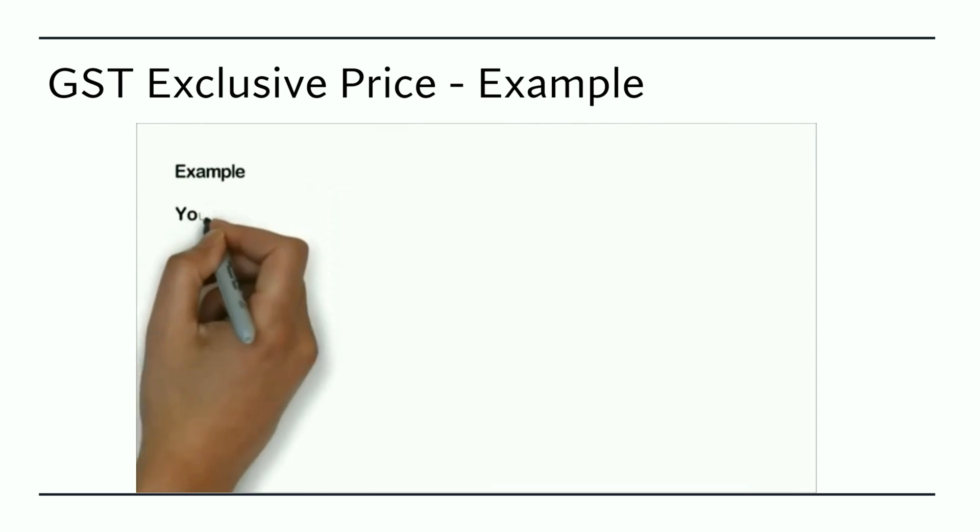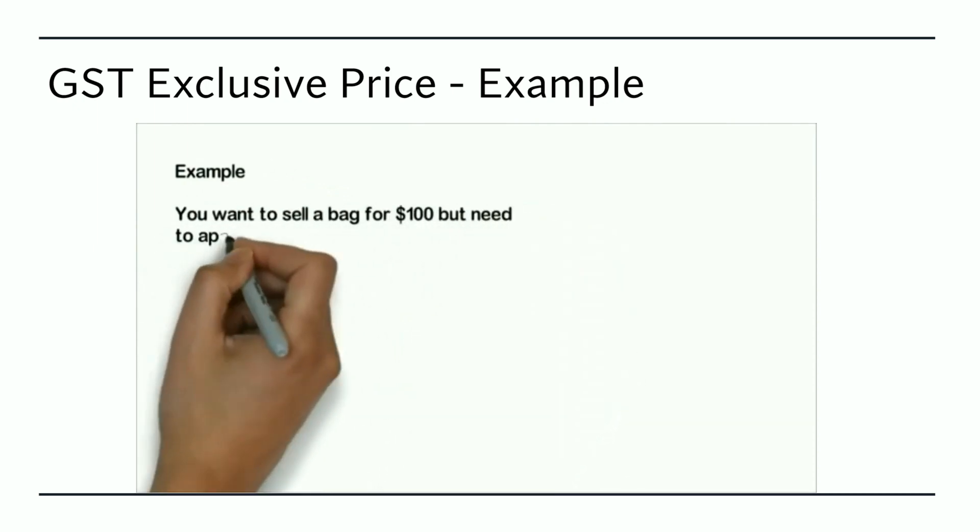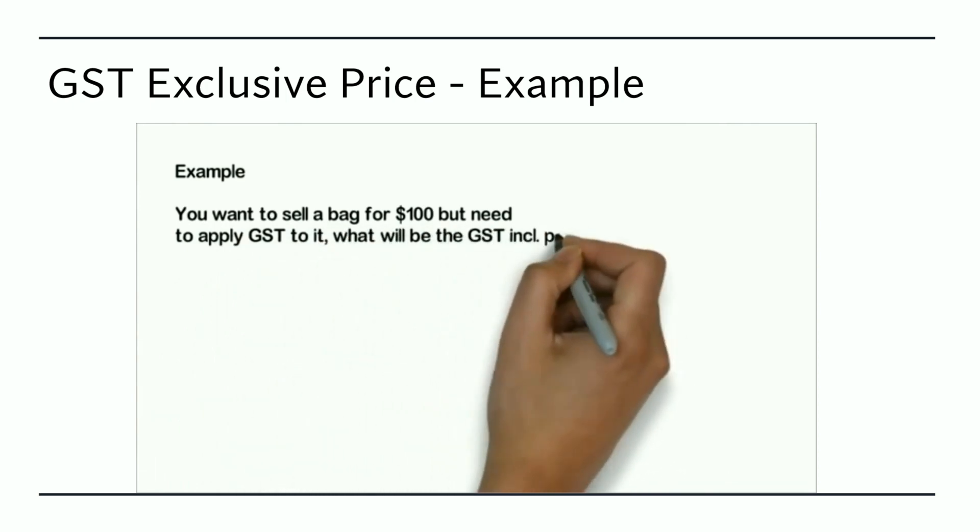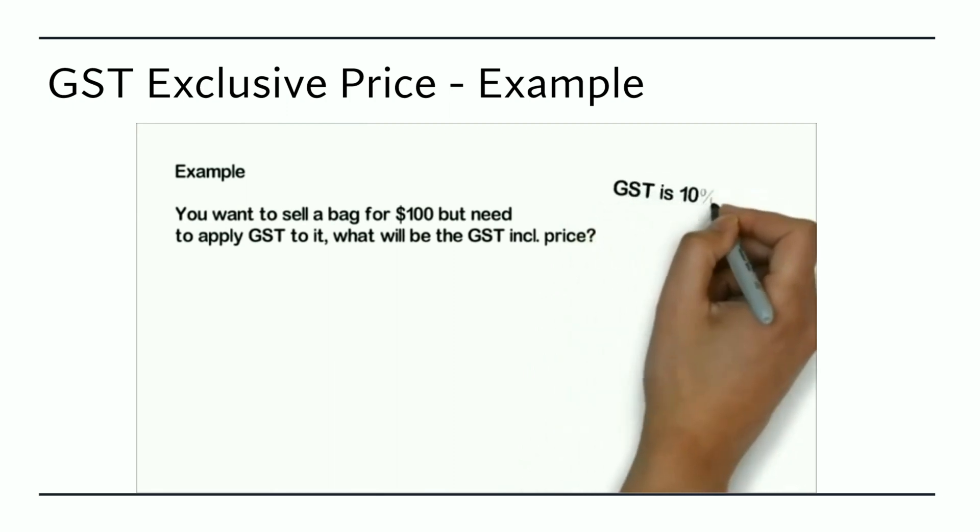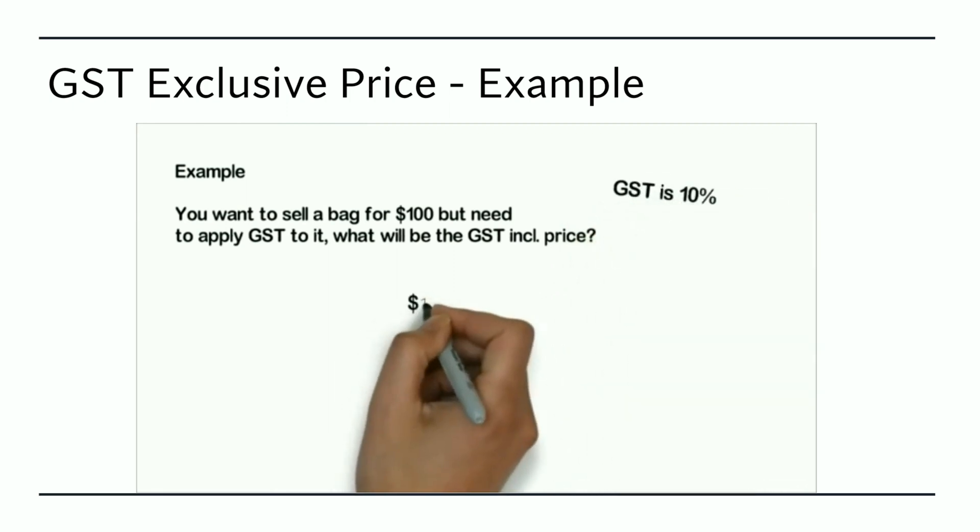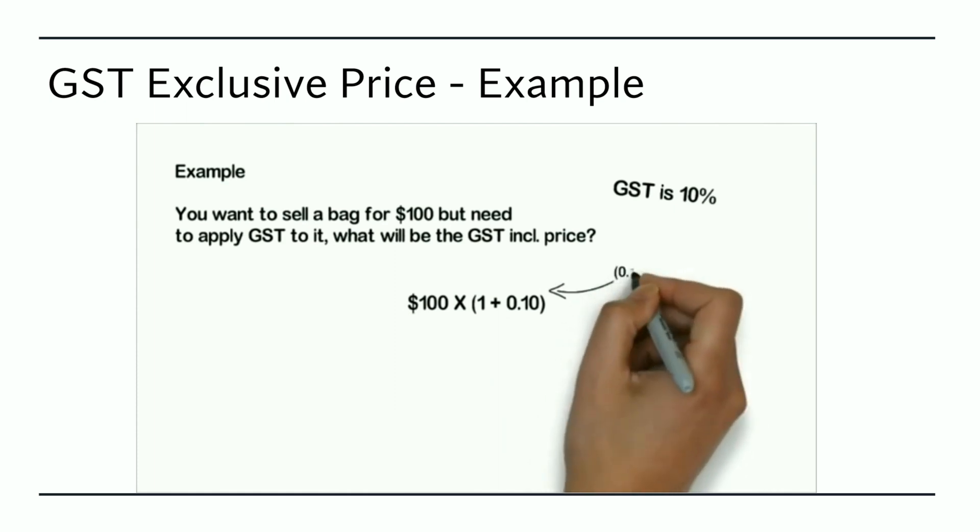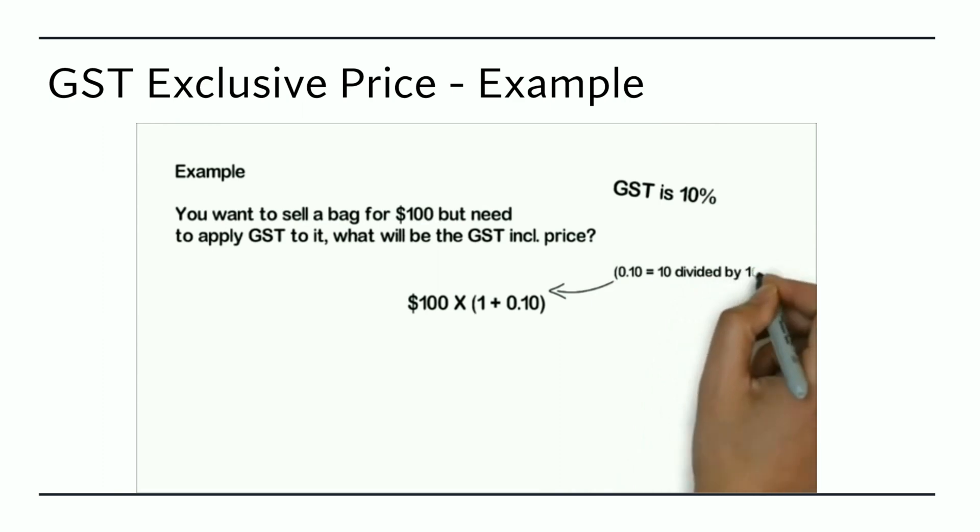For example, you want to sell a bag for $100 but need to apply the GST. So what will the GST inclusive price be? In this example, we're using 10% GST amount. So you take the GST exclusive price of $100 and multiply by 1 plus 0.10. The 0.10 comes from the fact that the GST amount is 10%, so 10 divided by 100, to change it to a decimal, is 0.10.